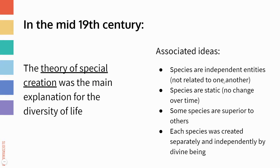So in the mid-19th century, the idea of special creation was the main explanation for where all the different life forms came from. Embedded within this theory of special creation, there are a couple of associated ideas. People thought that all species were independent from one another — not related to each other, separate and independent. People also thought that species were static, so the way a species looks now is the same way it looked and behaved when it was first created — they were created and they stay that same way forever.